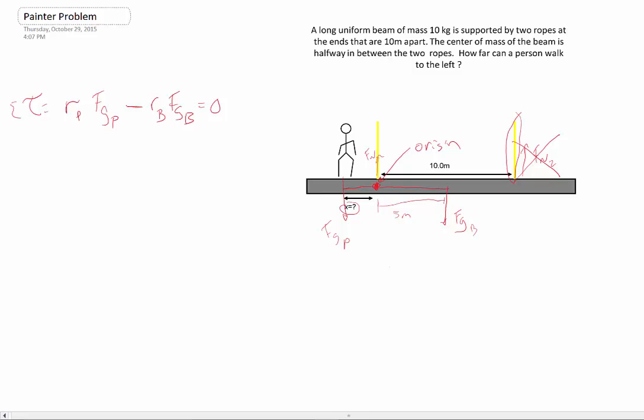So now, it's basically just left to solve this. So we get R of the person times force of gravity of the person equal to R of the beam times force of gravity of the beam, or R of the person is equal to R of the beam force of gravity of the beam times force of gravity of the person.